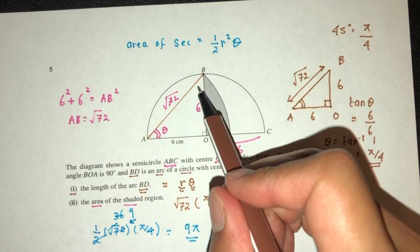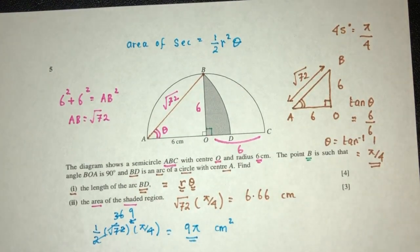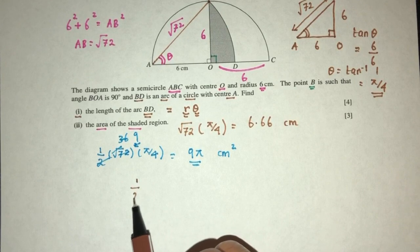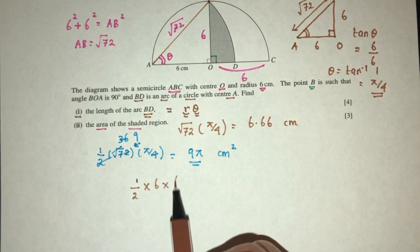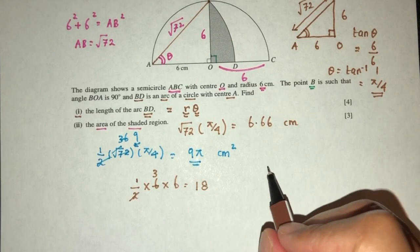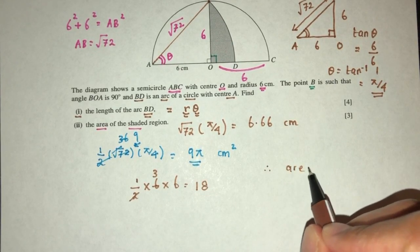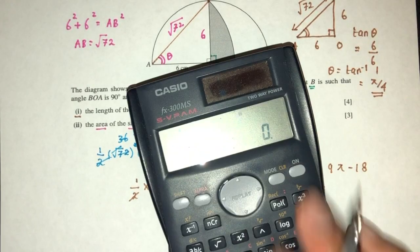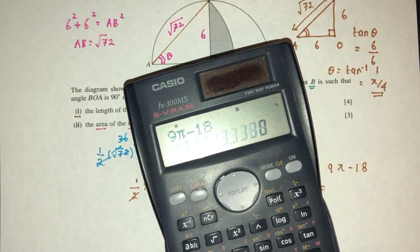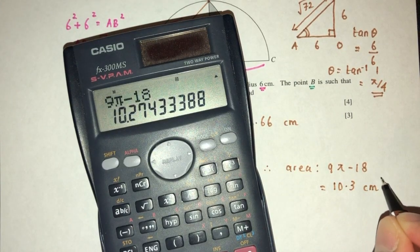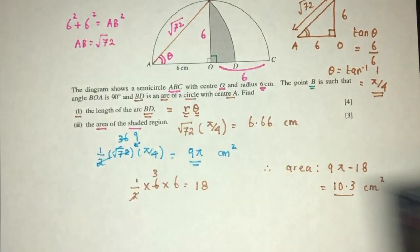Now we want to remove the area of the triangle to get this one. So pretty easy, this one is a right-angle triangle. It will be half times base times height. That will be 3 times 6, that will be 18. So finally, the area that we need is the whole thing minus 18. We can of course find the value for that. That will be 10.3 centimeters squared for the area, correct to 3 significant figures.